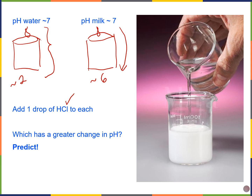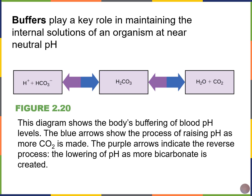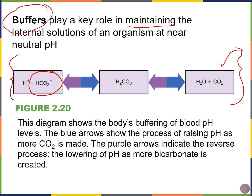The answer is buffers. Buffers play an important role in helping us maintain consistent pH. In the human body, one of the most important buffers of the blood is something called bicarbonate. If you study physiology in the future, you're going to see this equation a lot when dealing with acid-base physiology, learning about the lungs and kidneys and how they maintain normal blood pH. We're also going to see this in one of our future labs.